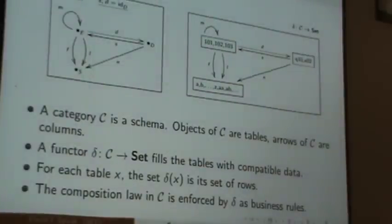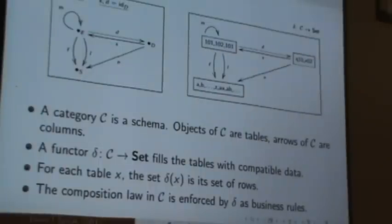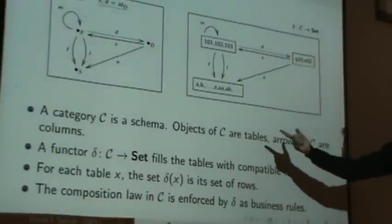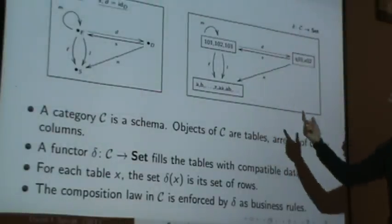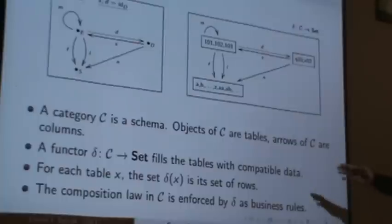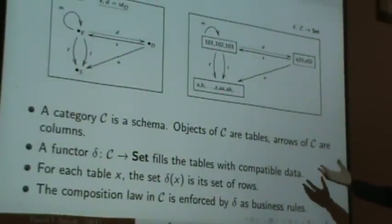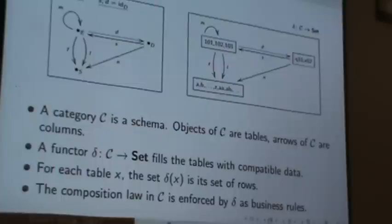So I think I've kind of said this five times, but category is a schema, like a small, finite category, you can think of as a database schema, and vice versa. And the objects of it are the tables, and the arrows are the columns, and a functor fills the tables with compatible data, in the sense that all the composition laws are going to work, and so that's the basic idea.